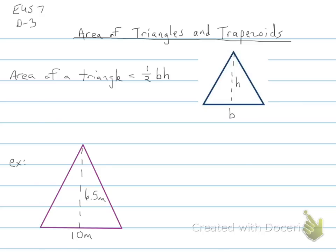We're going to start off with a triangle. So the formula for the area of a triangle is one-half the base times the height.